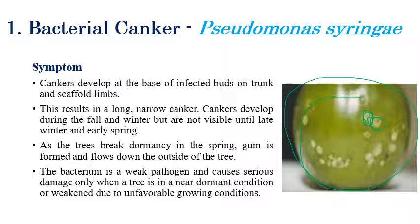Cankers develop especially during winter season and are not clearly visible during winter. In early spring season we can clearly see these symptoms. It is actually a very weak pathogen which causes serious damage only when the tree is in a dormant condition or during unfavorable conditions of growth. The cankerous growth on fruits indicates the presence of bacteria.